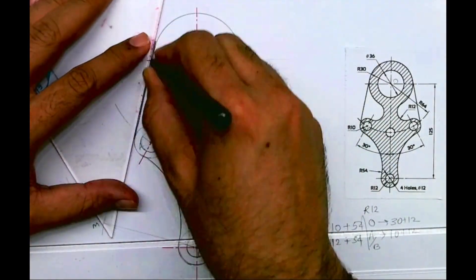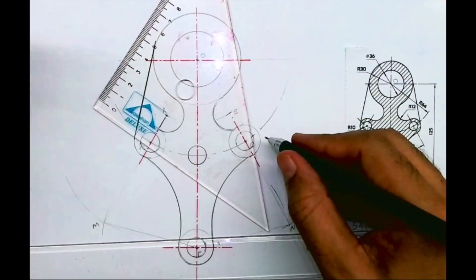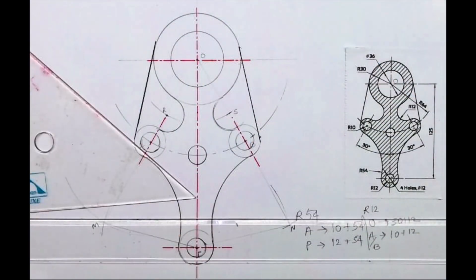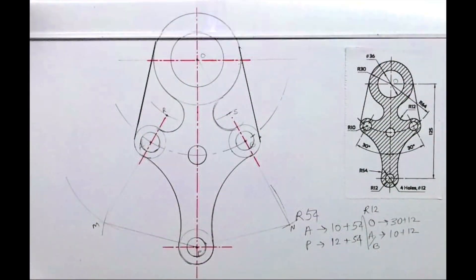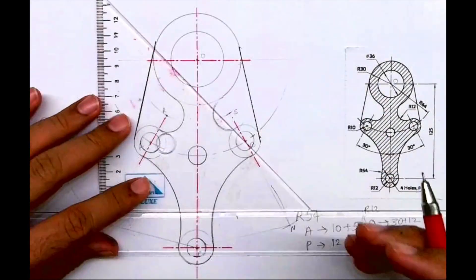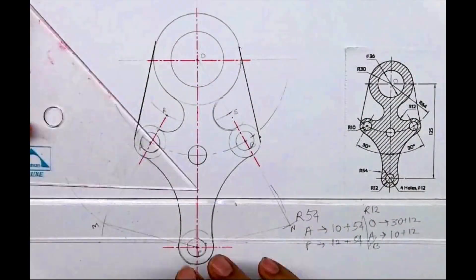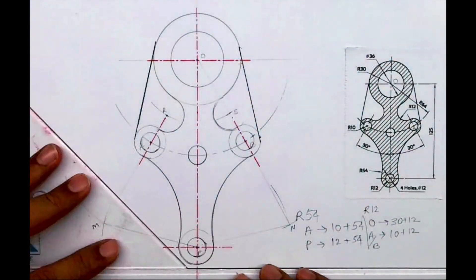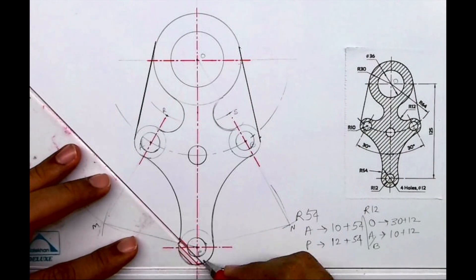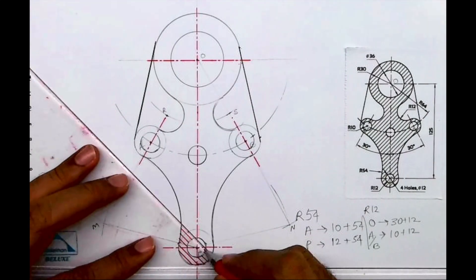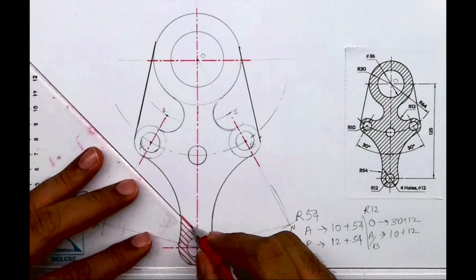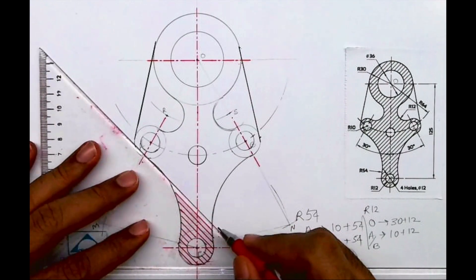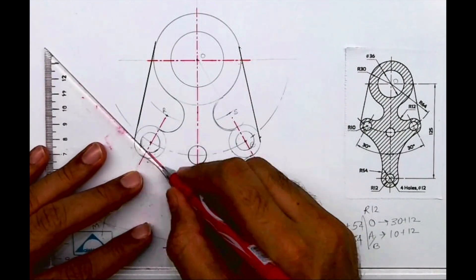Now we will draw the tangent. And then we will draw the hatching lines — these hatching lines are inclined at 45 degrees, so you can draw those. Once you are done with this, you are done with this sum. I hope you have understood this. Thank you.